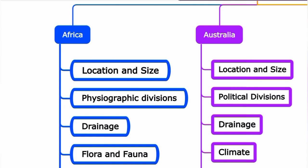Under physiographic divisions, Africa has 8 major physical divisions: the Sahara, Sahel, Savanna, Great Rift Valley, East African or Swahili Coast, Congo Basin, Southern Africa, and Madagascar Island.